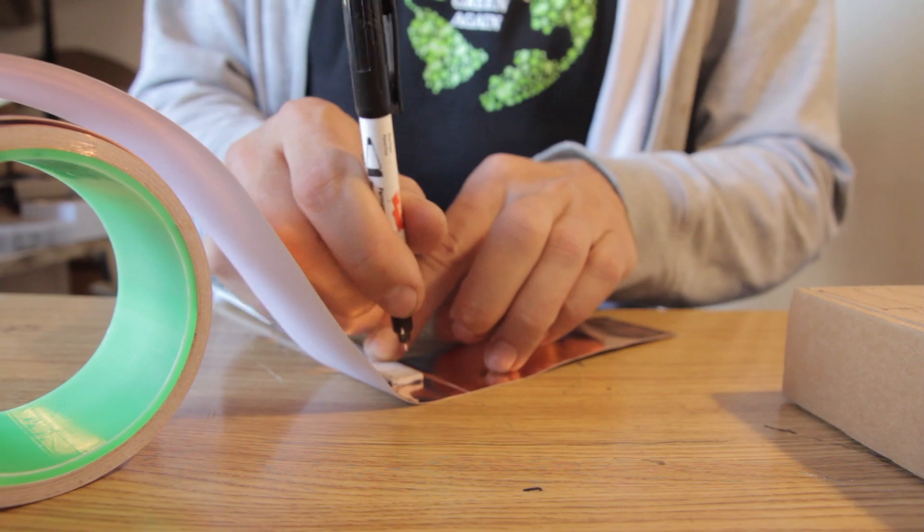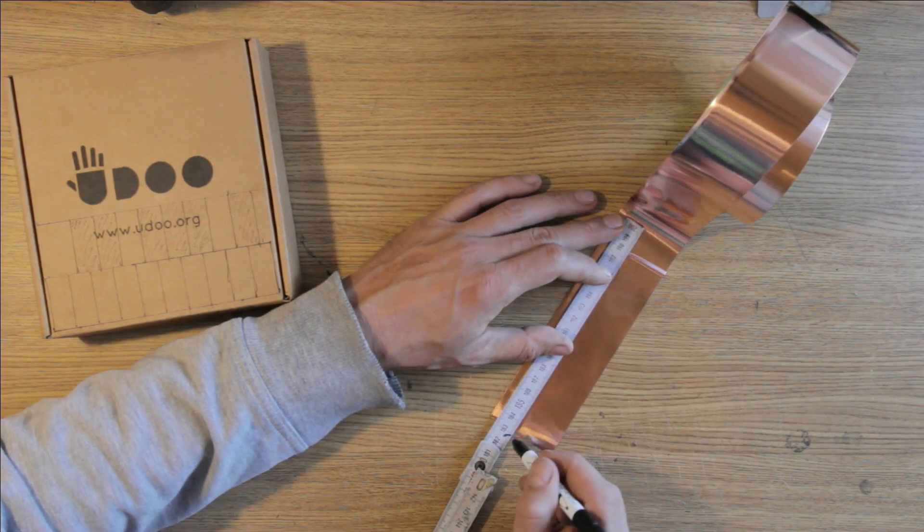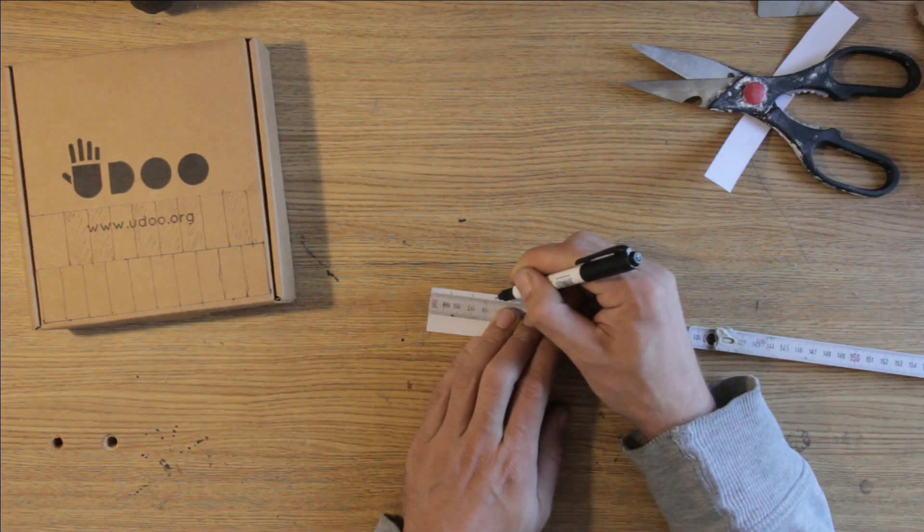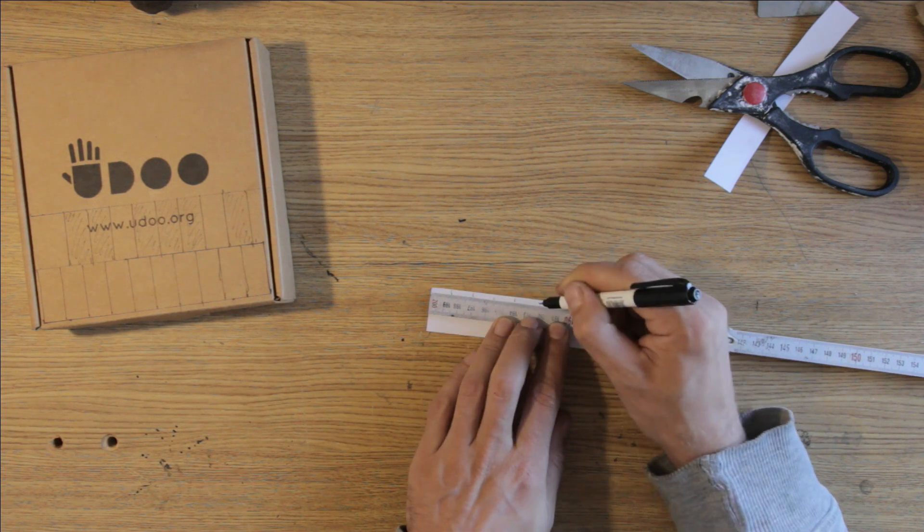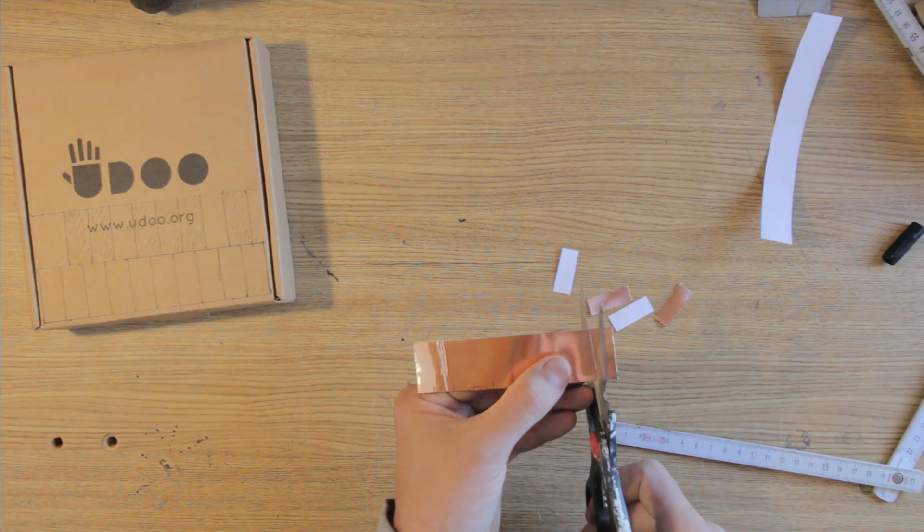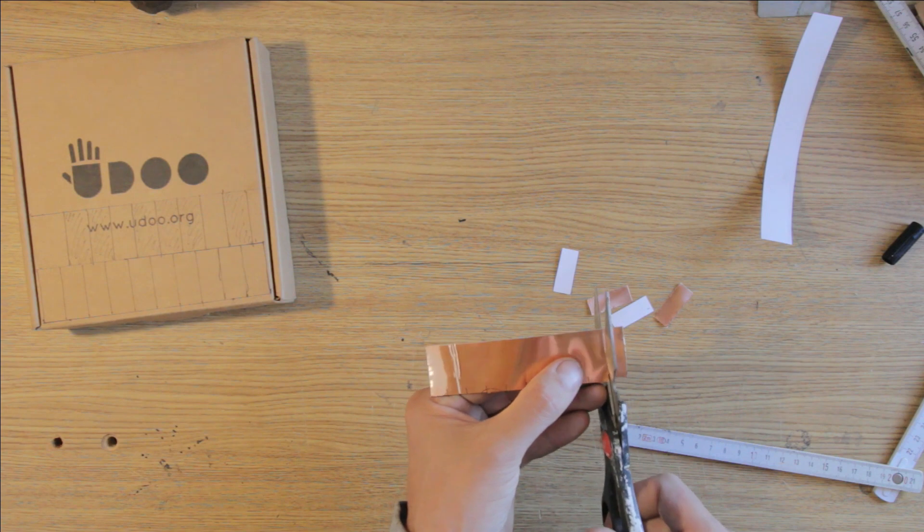Then it's time to decide on an electrode material. Many things are possible. Really any conductive material will do. This copper sticky tape is one of my favorites, but conductive paint is also a viable option.